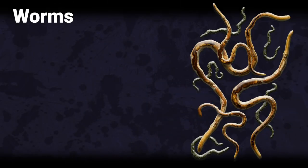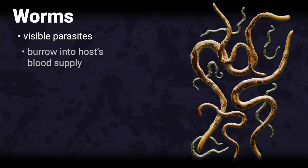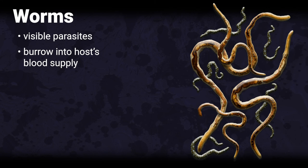Worms include roundworms, flukes, and tapeworms. Most are visible to the naked eye. They are parasites that live and feed off of a living host's blood supply. They can live inside humans as well as animals. Tapeworms are common in pets — the white segments of the tapeworms show up in the feces, and that is how tapeworm is diagnosed by the vet.